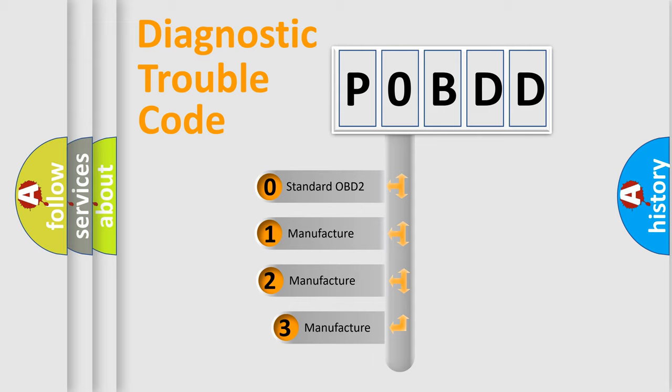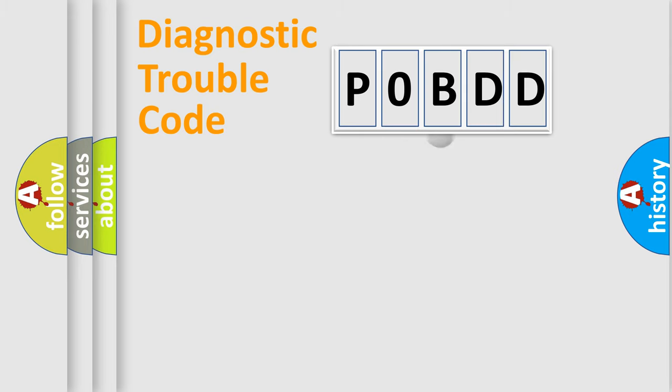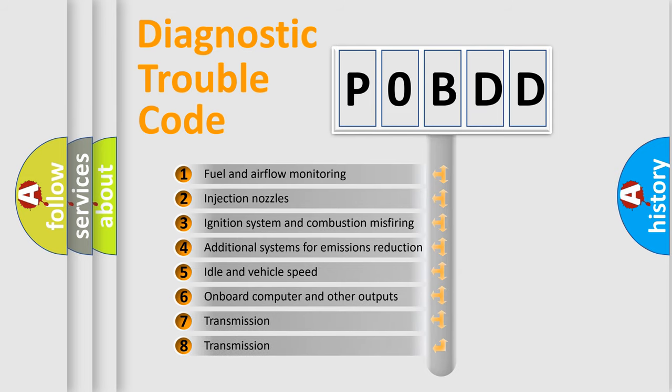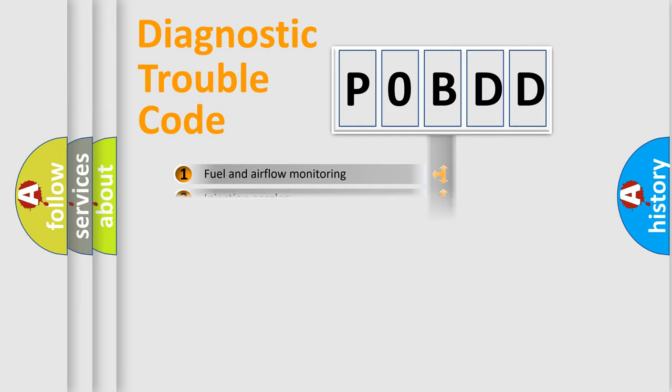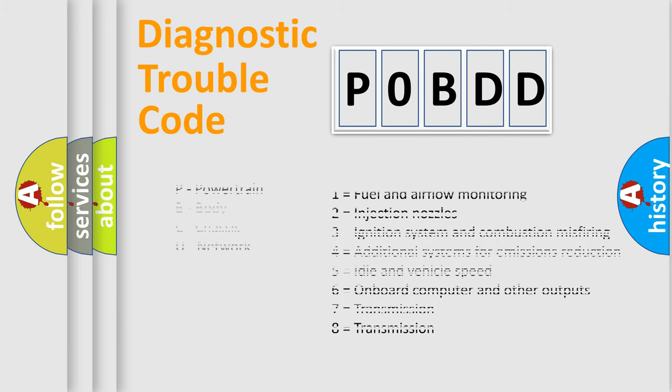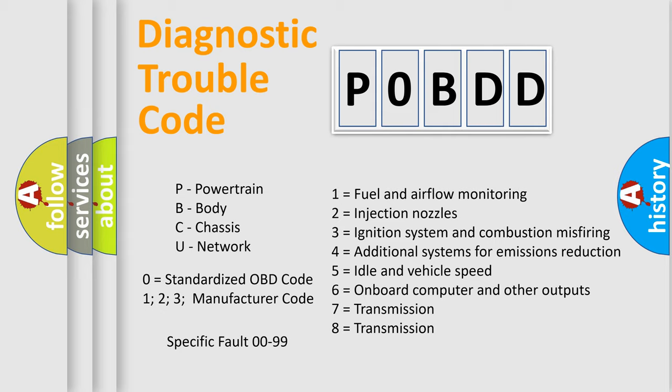If the second character is expressed as zero, it is a standardized error. In the case of numbers 1, 2, or 3, it is a manufacturer-specific error. The third character specifies a subset of errors. The distribution shown is valid only for the standardized DTC code. Only the last two characters define the specific fault of the group. Let's not forget that such a division is valid only if the second character code is expressed by the number zero.